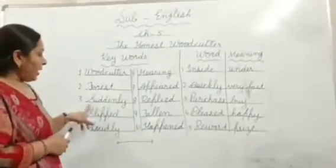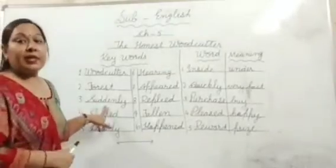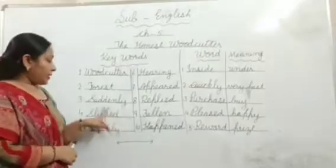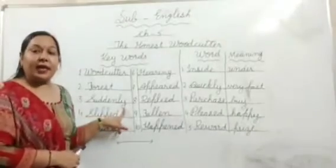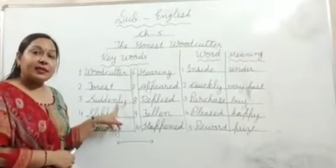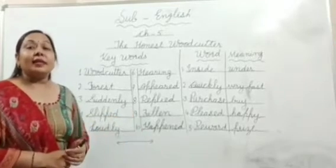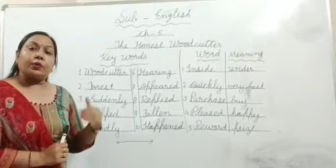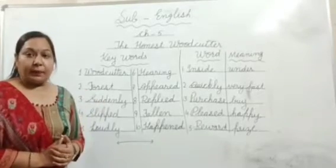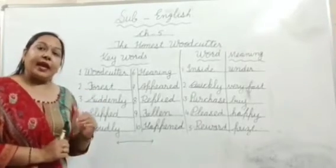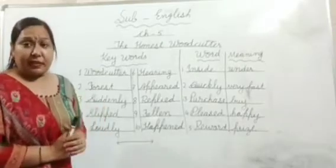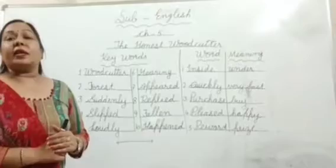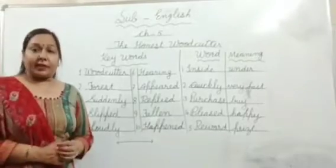Number three: S-U-D-D-E-N-L-Y — Suddenly. Suddenly means at once, or unexpectedly. Koi bhi cheez achanak ho jana — when something happens that we never expected. Suddenly means at once, or unexpectedly.